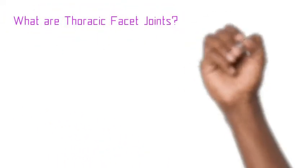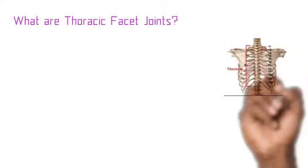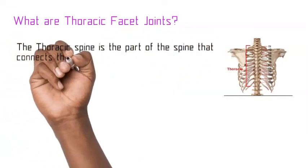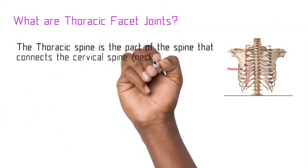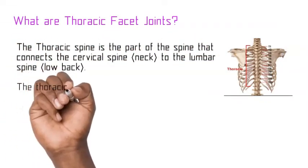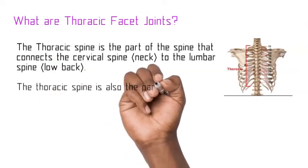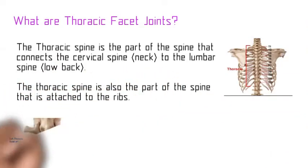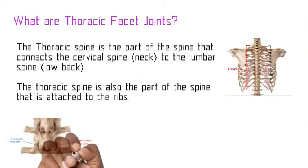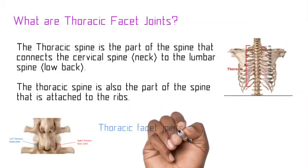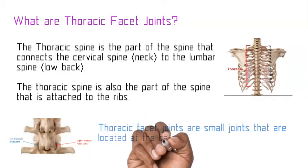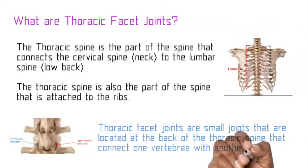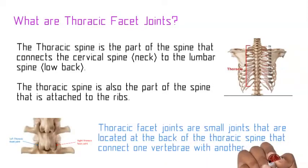What are thoracic facet joints? The thoracic spine is the part of the spine that connects the cervical spine to the lumbar spine. The thoracic spine is also the part of the spine that's attached to the ribs. Thoracic facet joints are small joints that are located at the back of the thoracic spine that connect one vertebrae with another.